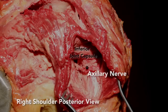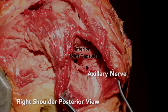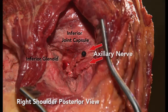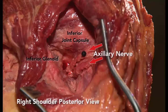The axillary nerve traverses inferior to the glenohumeral capsule to enter the quadrilateral space. As the axillary nerve courses inferior to the glenohumeral capsule, it arborizes, forming several smaller branches near the long head of the triceps insertion. The posterior branch is typically responsible for posterior deltoid innervation and gives rise to a branch innervating the teres minor.